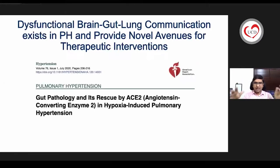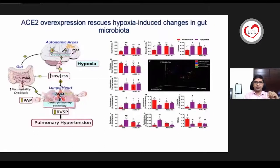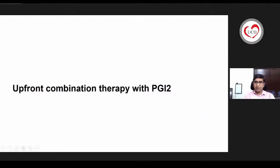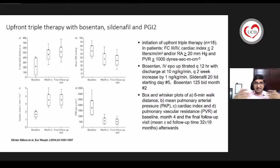PVDomics uses deep clinical and 'panomic' phenotyping to identify novel sub-phenotypes of pulmonary vascular disease regardless of existing WHO classifications. Preliminary metabolic data reveals novel amino acid and lipid clusters not defined by existing groups or hemodynamics, which may benefit from targeted therapies. Additionally, there is emerging evidence linking gut pathology — specifically ACE2 overexpression in hypoxia — and hypoxia-induced pulmonary hypertension, which may represent a future therapeutic target.